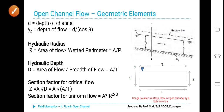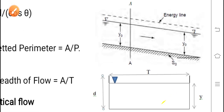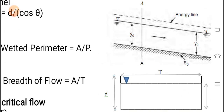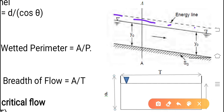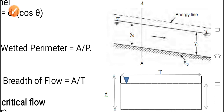If you consider the channel bed slope S0 with respect to horizontal, Y0 is the depth of flow and this dotted line represents the energy line. This is the water level; this is the bed of channel.